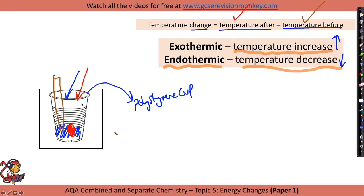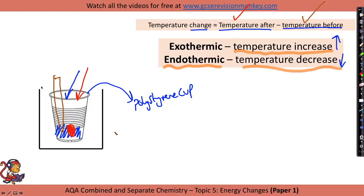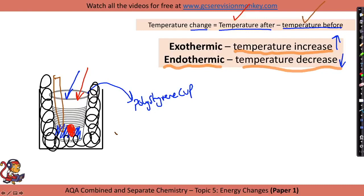However, a lot of heat can escape, so we need to insulate the polystyrene cup. Look out for this in the exam — they'll ask how you improve the method. You could, for example, put it inside a beaker of cotton wool, and you could put a lid on it, perhaps with just a small hole for the thermometer to go through. Those two things are really important.